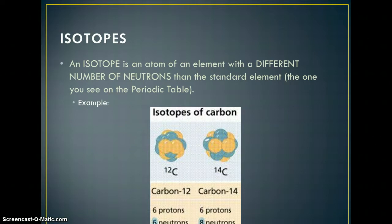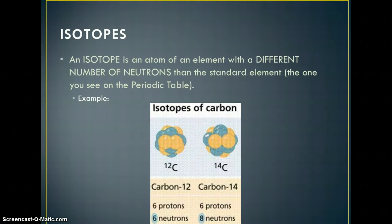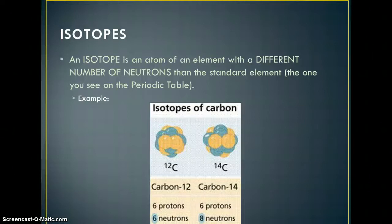Isotopes are something new and can be a little confusing. An isotope is an atom of an element with a different number of neutrons than the standard element you see on the periodic table. The example here is carbon. Carbon on the periodic table is atomic number 6, and the atomic mass is 12. Carbon-12 has 6 protons and 6 neutrons. When doing Bohr diagrams, you take the bottom number minus the top to get neutrons — that's 6 for the standard element.